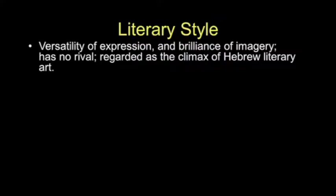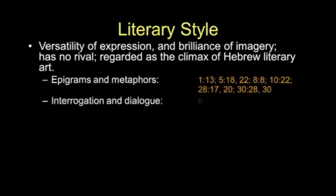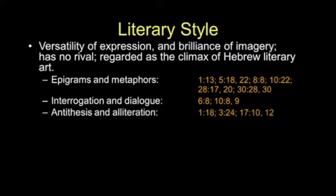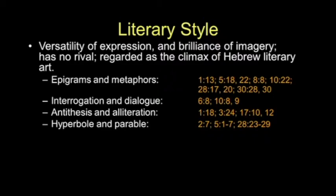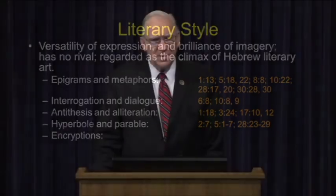Isaiah is a very articulate guy with versatility of expression. The brilliance of his imagery has no rival in the Bible, and it's regarded as the climax of Hebrew literary art. He uses epigrams and metaphors, interrogation and dialogue, antithesis and alliteration, and hyperbole and parables. You'll also discover in Isaiah what are probably incidental encryptions. If you're a student of cryptography, you're aware of some patterns in the Bible, and one occurs in Isaiah chapter 7 — well known to the science of encryption.